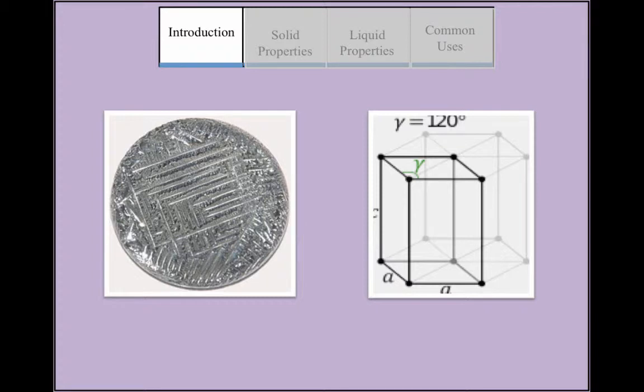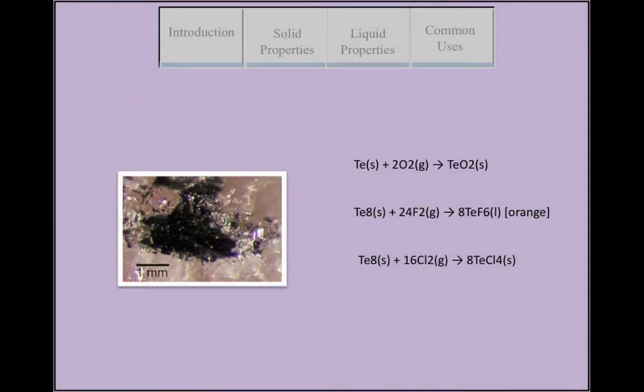It has a hexagonal crystal structure and is diamagnetic. The density is 6.24 grams per centimeter cubed. Because of its metalloid nature, tellurium is a semiconductor that has greater electrical conductivity in certain directions which depends on atomic alignment. The conductivity of tellurium increases slightly when exposed to light.